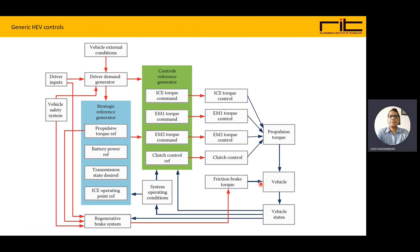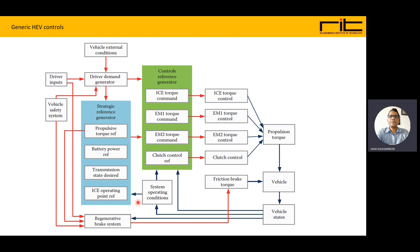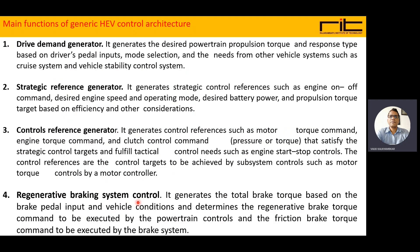Input also comes from the predicted brake torque to the vehicle. Vehicle states are given to the control reference generator and strategy reference generator through system operating conditions. Inputs are also given to the regenerative braking system from the propulsion torque reference, from the driver input, and from the vehicle safety system. This complete block shows the generic hybrid electric vehicle controls with the functions of driver demand generator, strategy reference generator, control reference generator, and regenerative braking system control.